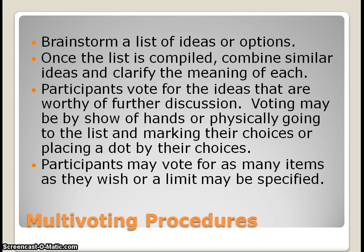There are some procedures to follow when using this process. The first step is brainstorming — another group process tool. After a brainstorming session where a group formulates a list of ideas or options, you would move into the multi-voting procedure. Once the list is compiled, you'll combine similar ideas and clarify the meaning of each, so that group members don't fail to vote for an idea simply because they're confused by it.